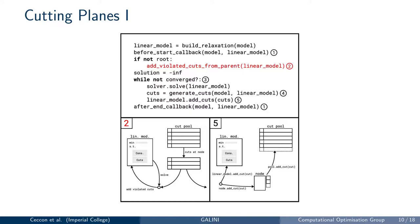The cut loop implemented by Galini is fairly standard. Galini includes a cut pool where all cuts are stored and keeps track of which cuts were generated at which node. Generating cuts can be expensive, so before entering the cut loop proper, we check if any cuts from the current node's parent are violated and add them to the problem. As an algorithm developer, you don't have to worry about managing cuts yourself — Galini will manage cuts automatically by adding them to the optimization problem and to the cut pool. All you have to do is provide a list of valid cuts at every iteration of the cut loop.